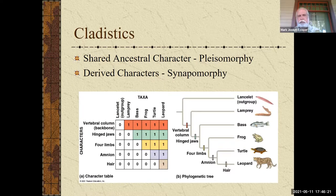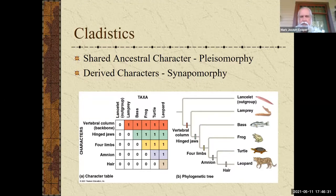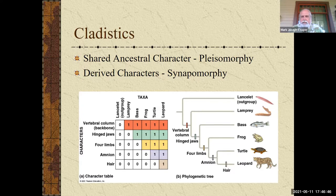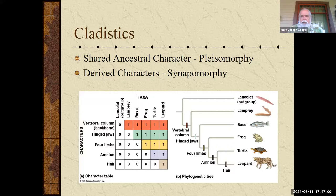When looking at characteristics, you need to recognize shared ancestral characters, called plesiomorphies — something that all those species have, like a notochord, the precursor to the backbone, which everybody in a vertebrate group has because it's ancestral. A derived character, called a synapomorphy, is something that evolved later — for example, the amniotic egg, found in turtles, leopards, birds, and all reptiles and mammals. That would be a derived character.